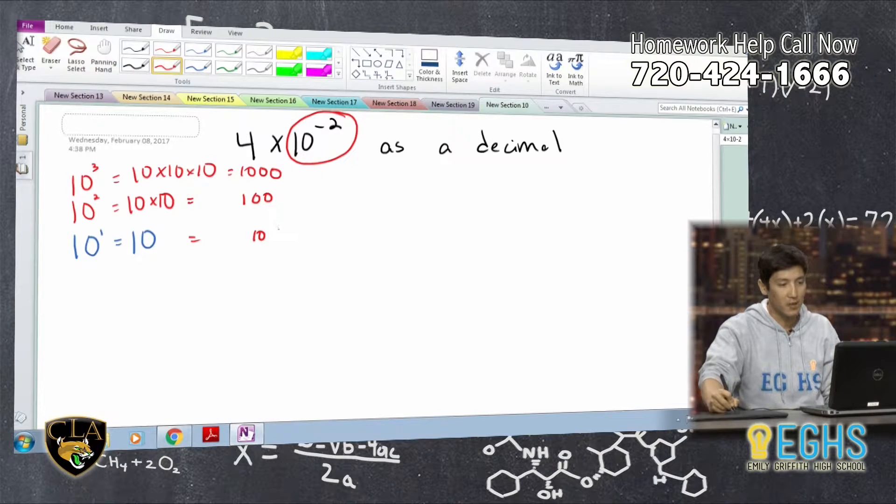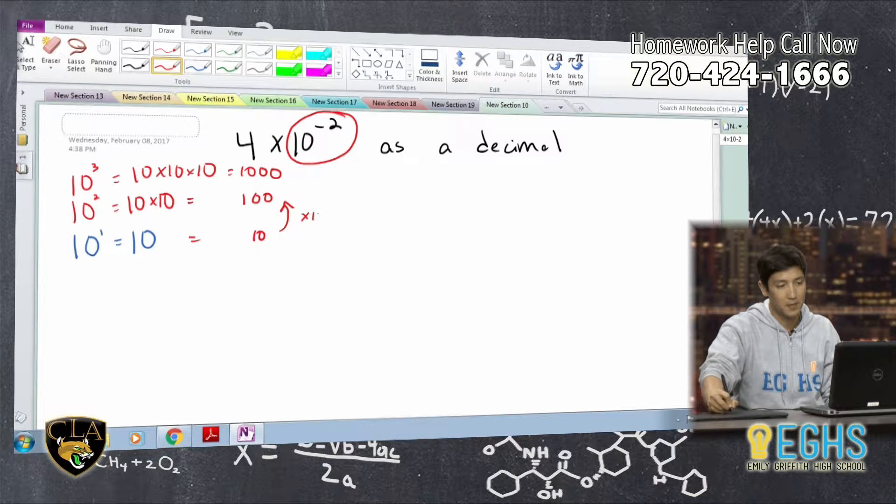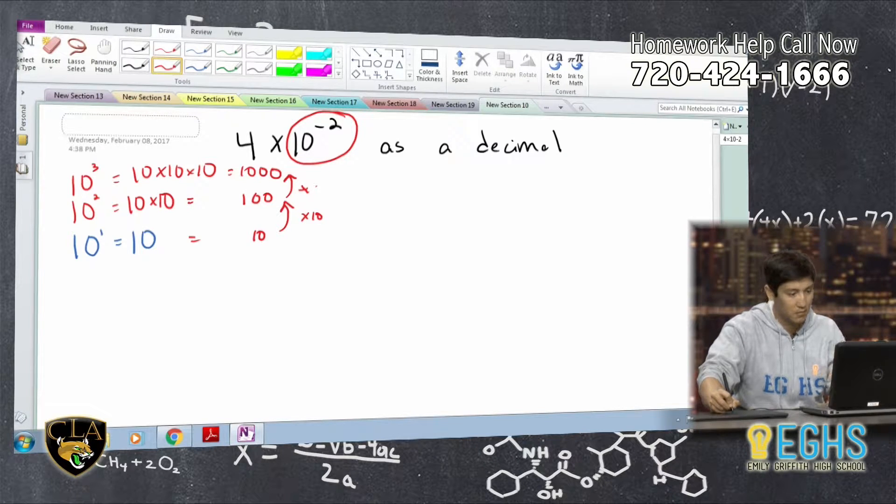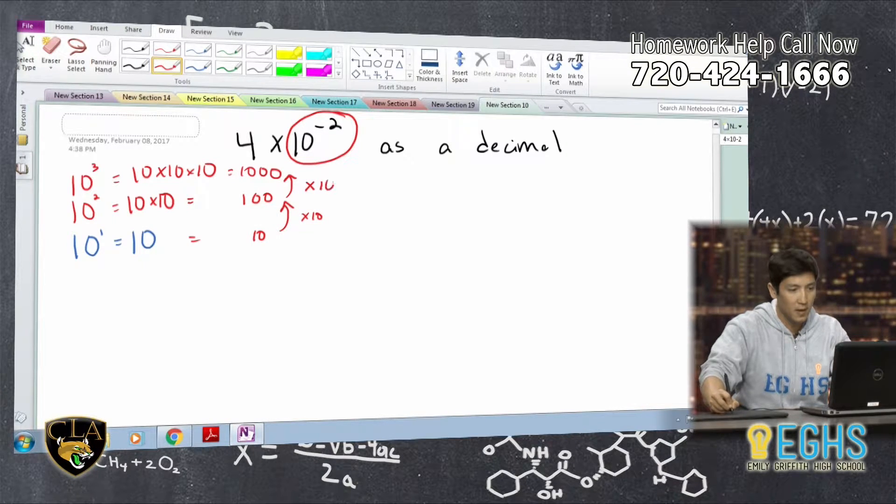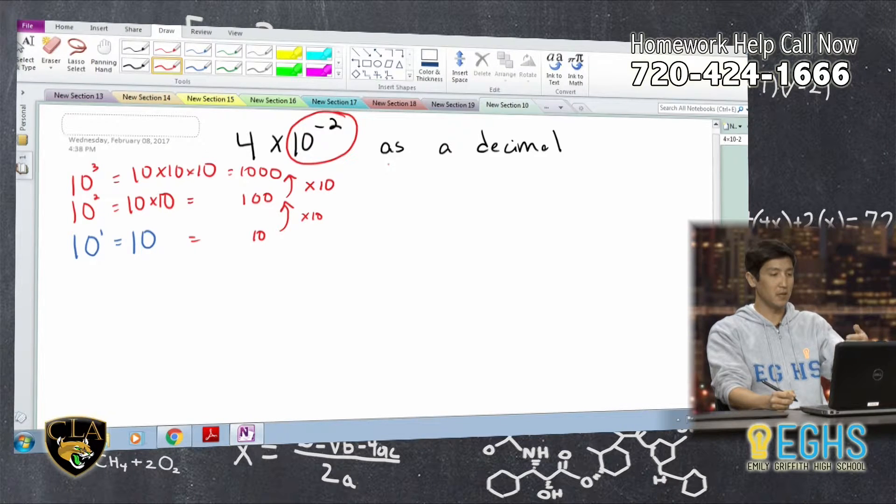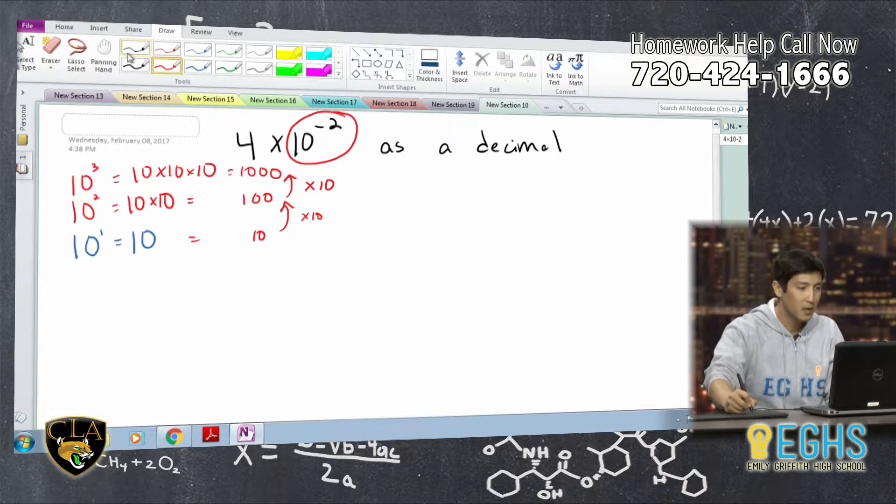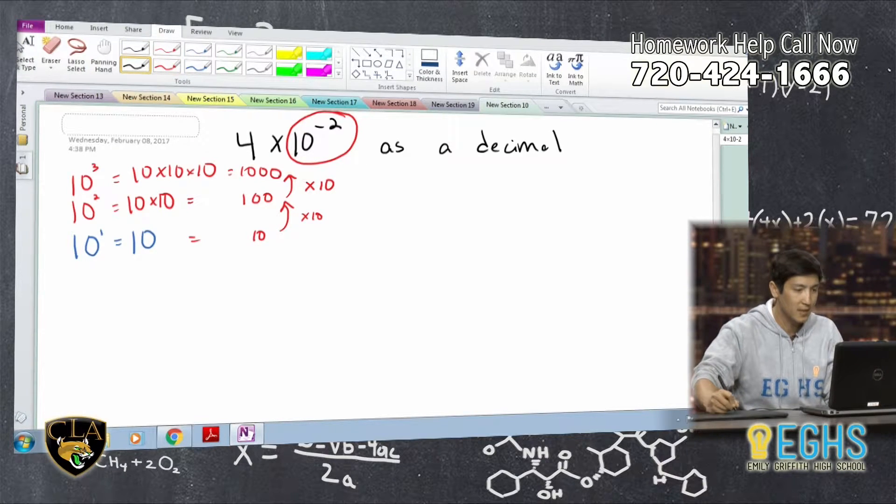So like Becca was saying, if we think about this, we're really like multiplying by 10. Multiplying by 10. If we kept going, we would be eventually, we just keep multiplying by 10, like adding another zero at the end every time. But we go the opposite direction to get back down.